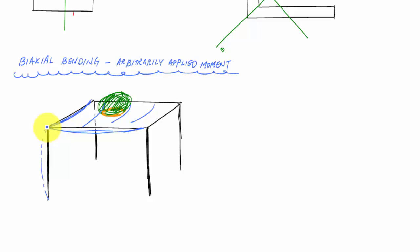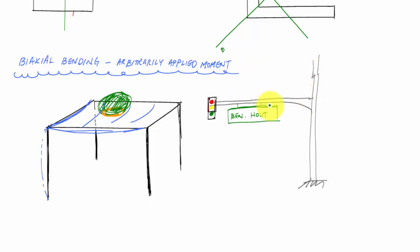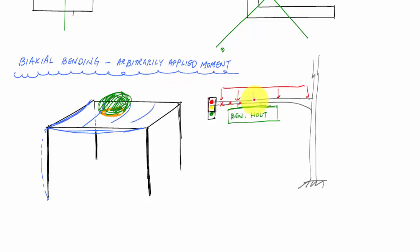Another example of biaxial bending is a street sign on a windy day. The self-weight of the sign causes bending in-plane, and when wind applies a load perpendicular to the board, it causes bending out-of-plane as well. The beam ends up bending in some diagonal direction — these are classic examples of biaxial bending.